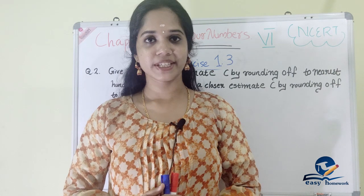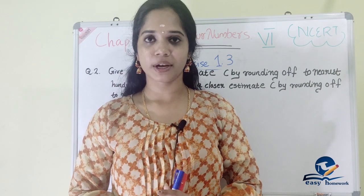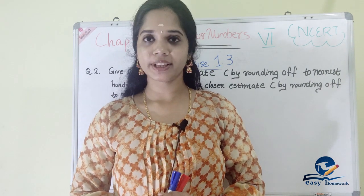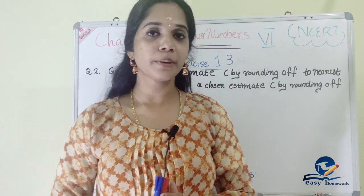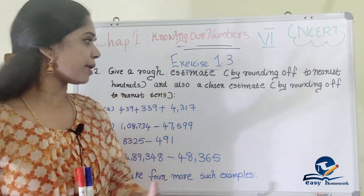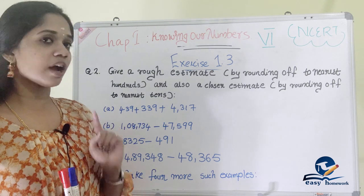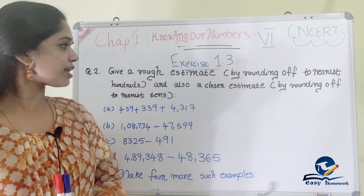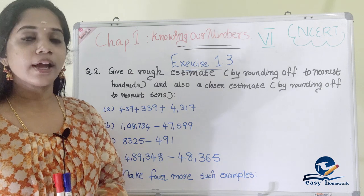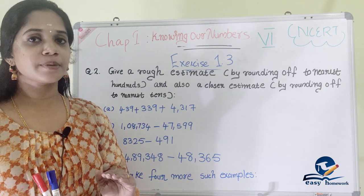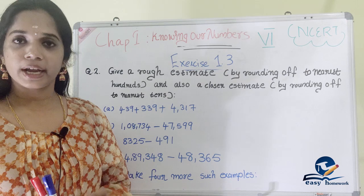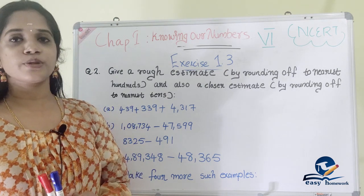Hello everyone, welcome to VC Homework. I am Swathi. We are going to do the second question in Exercise 1.3. Give a rough estimate by rounding off to the nearest 100s, and a closer estimate by rounding off to the nearest 10s.